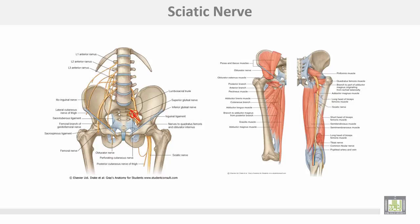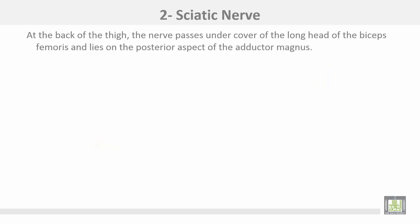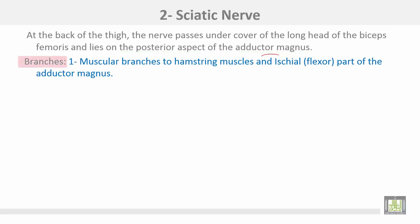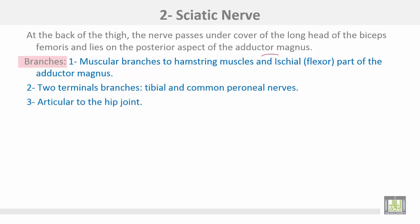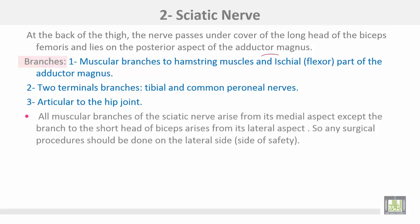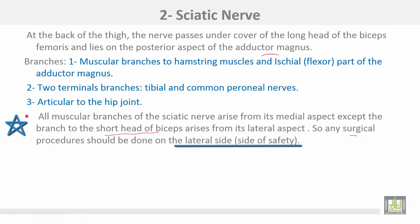The sciatic nerve is the largest branch of the sacral plexus. It passes through the greater sciatic foramen and descends in the back of the thigh, passing under cover of the long head of the biceps femoris and lying on the posterior aspect of adductor magnus. Branches in the back of the thigh include muscular branches to the hamstring muscles and the ischial part of adductor magnus, and two terminals: tibial and common peroneal nerves, plus articular branches to the hip joint. All muscular branches arise from the medial aspect of the sciatic nerve except the branch for the short head of the biceps, which arises from the lateral aspect. Therefore, any surgical procedures should be performed on the lateral aspect — the side of safety.